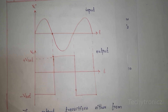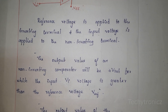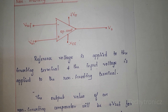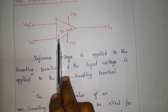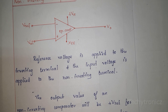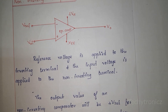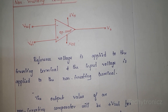Next, we will discuss about the non-inverting comparator. This is the circuit diagram of the non-inverting comparator. In the non-inverting comparator, we give the input voltage to the non-inverting terminal and the reference voltage to the inverting terminal. The reference voltage is applied to the inverting terminal, and the input voltage is applied to the non-inverting terminal.